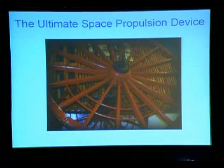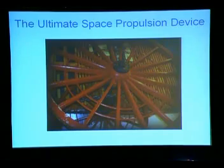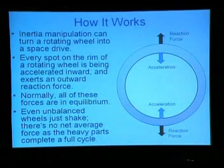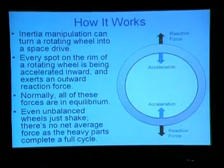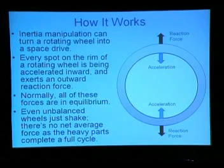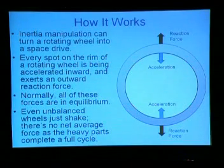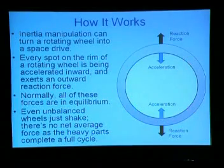Why call a wagon wheel the ultimate space propulsion device? Inertial manipulation lets you turn a rotating wheel into a space drive. Every spot on the rim of a rotating wheel is being accelerated inward and exerts an outward reaction force. Normally all of these forces are in equilibrium — even an unbalanced wheel just shakes as it spins over a full cycle. There's no net average force; it just rattles around back and forth.